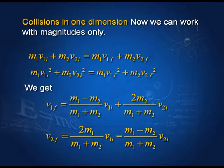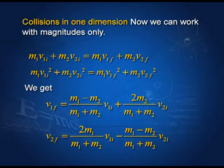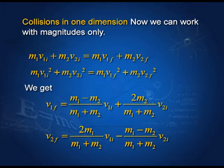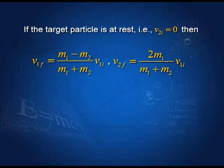From these two equations we can solve for the two unknowns — the final velocities v₁f and v₂f — and obtain expressions for them. We are doing collisions in one dimension, so there is no need to distinguish between velocity and speed; we use magnitudes. If the target particle is at rest (v₂ᵢ = 0), the equations for v₁f and v₂f become very simple, and we can now study special cases.